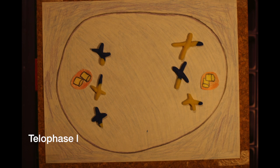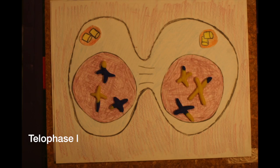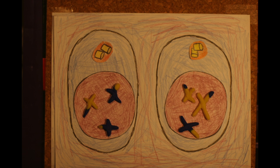Then telophase one happens when the nuclear envelopes develop on each side of the cell with its respective DNA. The cell divides. Cytokinesis is the division of the cell membrane.